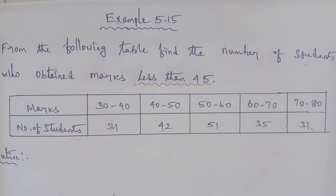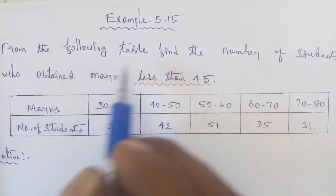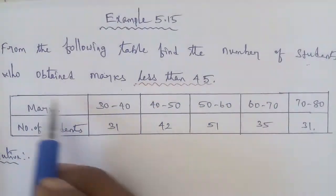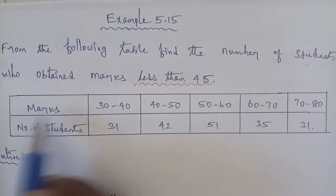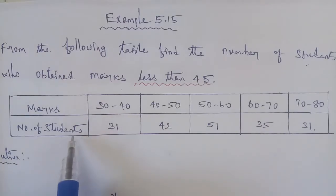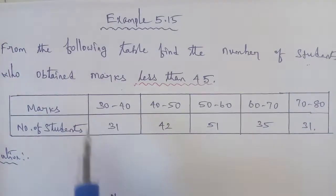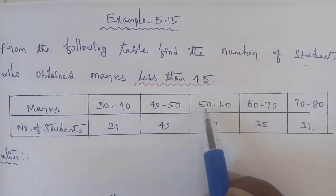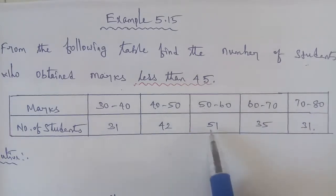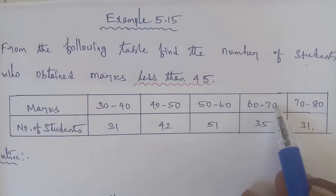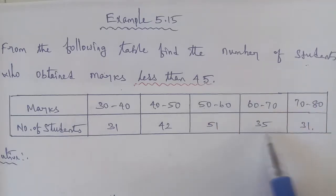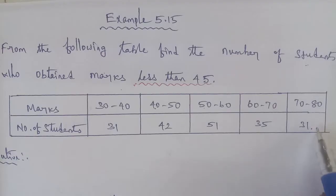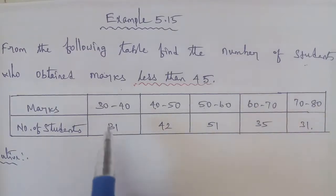Hi students, let's solve Business Maths Example 5.15. From the following table, find the number of students who obtain marks less than 45. The given data: marks 30–40 has 31 students, 40–50 has 42 students, 50–60 has 51 students, 60–70 has 35 students, and 70–80 has 31 students.